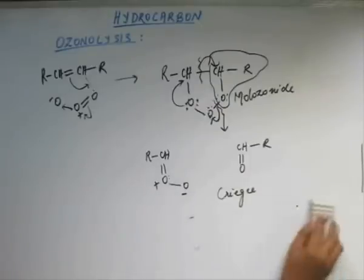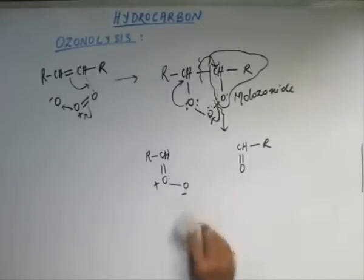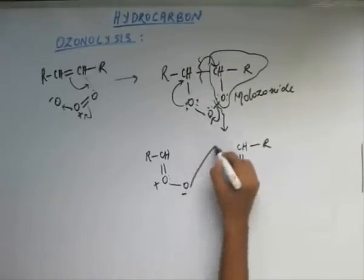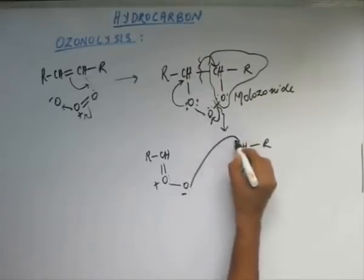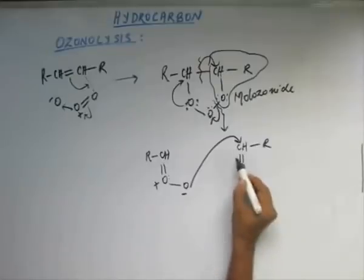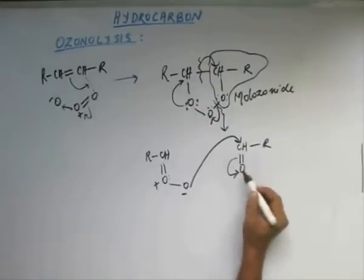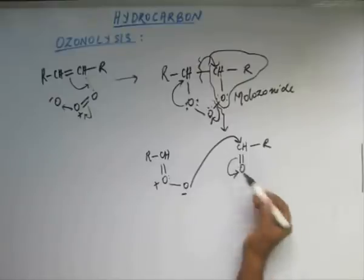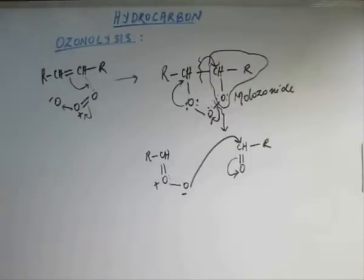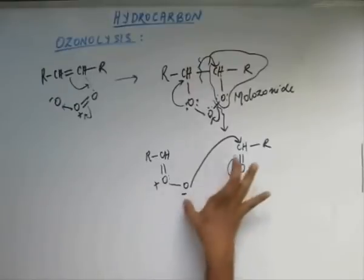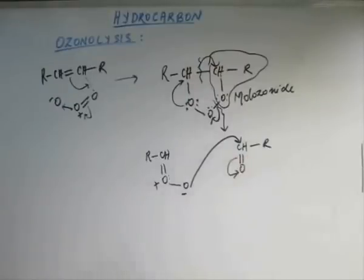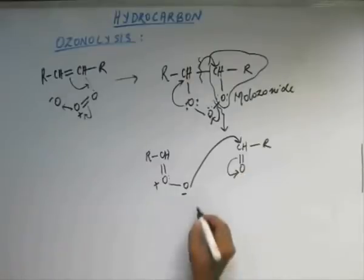So this is going to act as a nucleophile, and these two Criegee intermediates are going to react with each other. This oxygen is going to attack this carbon. When it does that, this pi bond is going to break and the electrons of this pi bond are going to go into the orbital of this oxygen. There is a bond formation between this oxygen and this carbon, and this oxygen is going to have a negative charge.